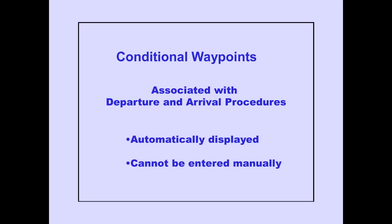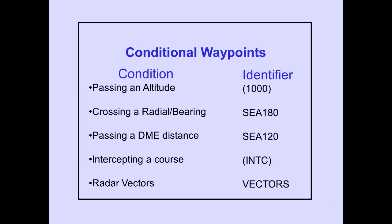Conditional waypoints are associated with departure and arrival procedures. They are automatically displayed and cannot be entered manually. Conditional waypoints occur when passing an altitude, crossing a radial or bearing, passing a DME distance, intercepting a course, or receiving radar vectors. Passing an altitude and intercepting a course, conditional waypoints are displayed with parentheses on the legs page.